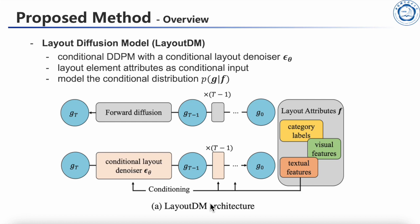Overview. We propose a novel layout generation model named layout DM. In our paper, G presents the geometric parameters of the elements in the layout. F represents the attributes of the layout elements. Layout DM learns the conditional probability distribution P(G given F) by modeling the forward and reverse diffusion process, which are Markov processes with T time steps.